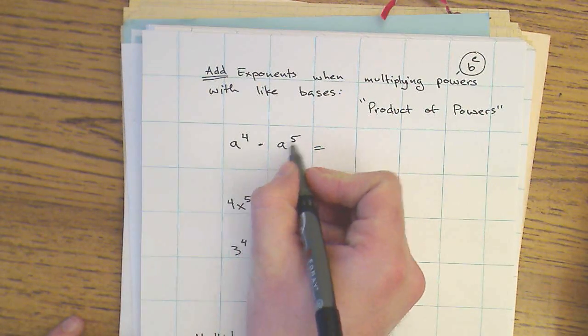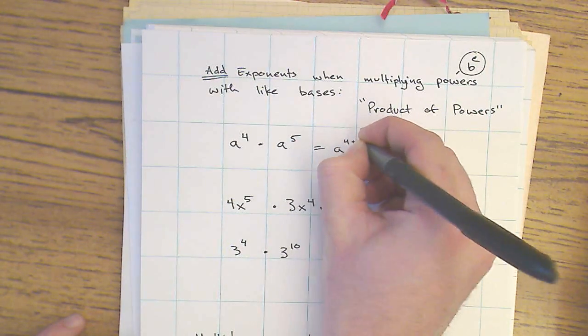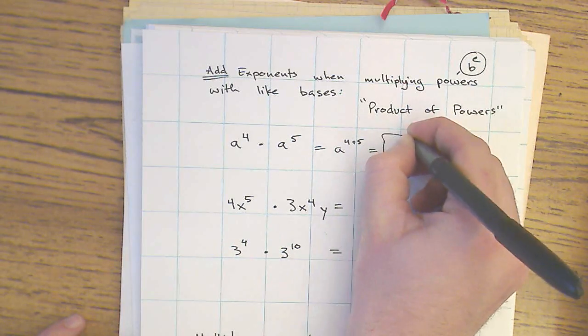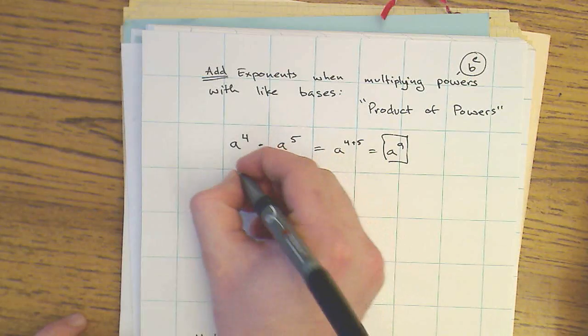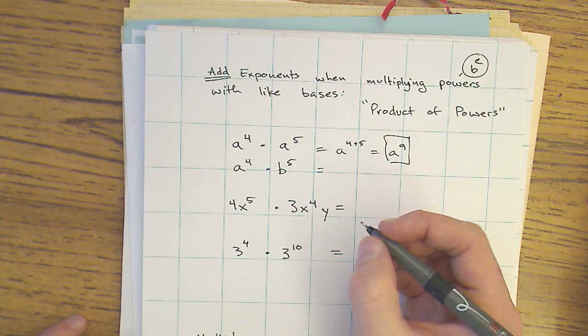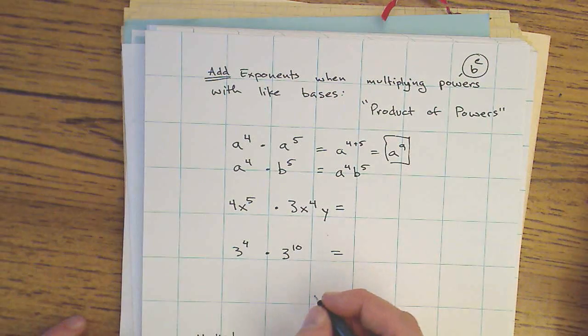So a to the 4th times a to the 5th, that's a time when I would add the exponents. So I'm thinking a to the 4 plus 5, really a to the 9th. Here's an example of powers with unlike bases. a to the 4th times b to the 5th. And that gives me a to the 4th, b to the 5th.